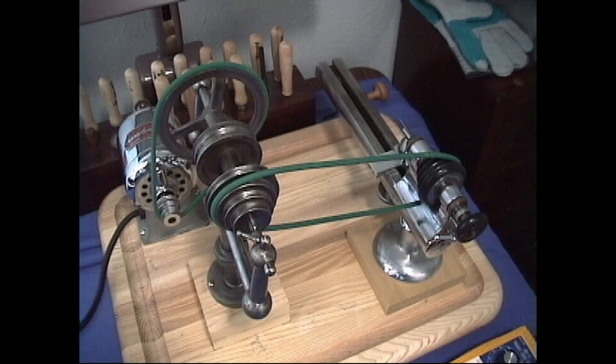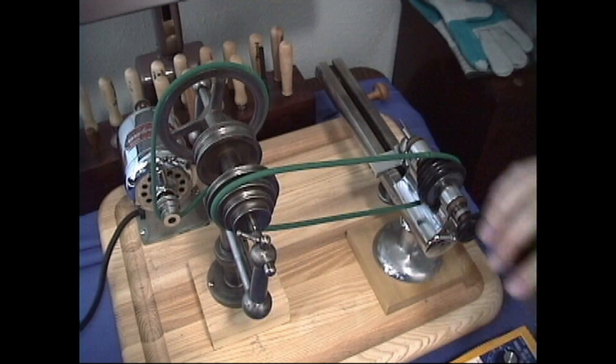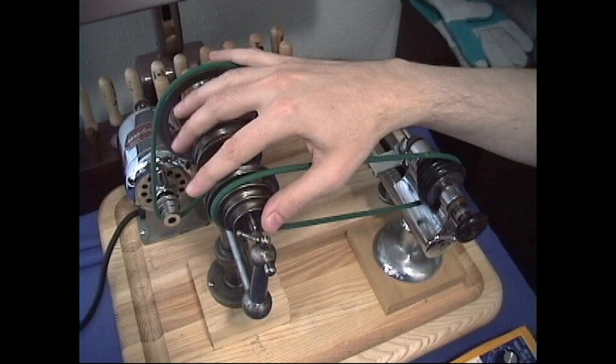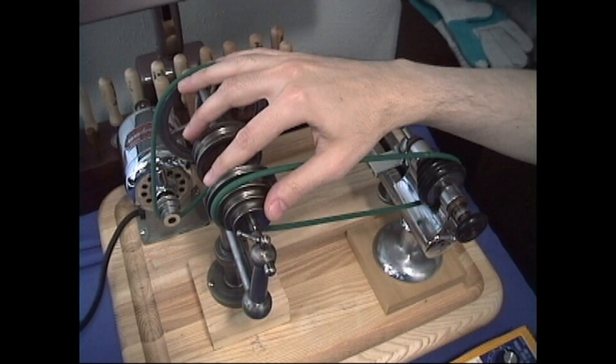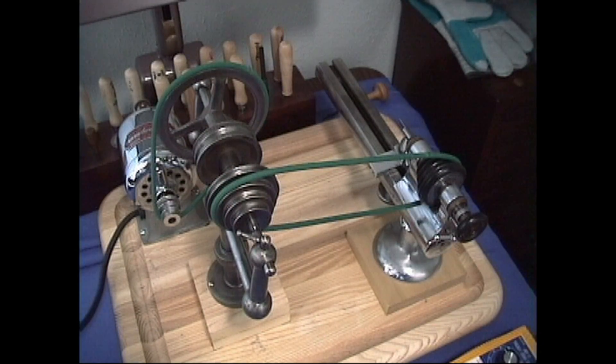The lathe we're going to use is set up with what's called a counter shaft pulley system. You'll probably see these if you go to any clock and watch conventions where people are selling lathes. These counter shafts are sometimes referred to as transmissions because that's really what they do.